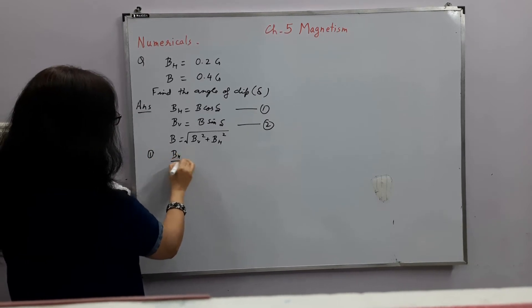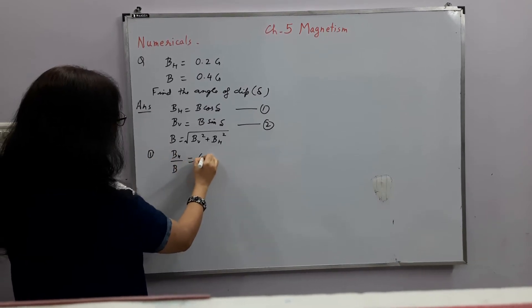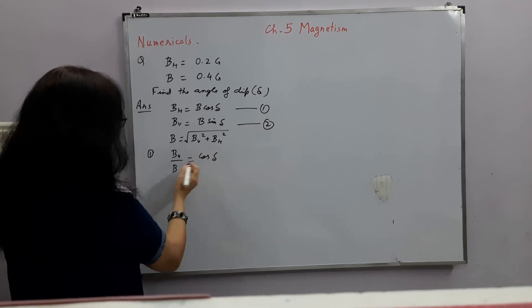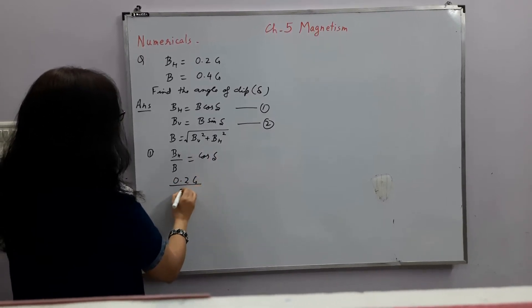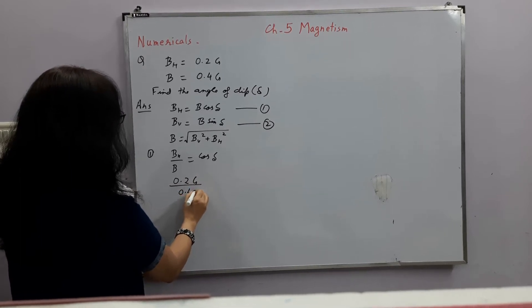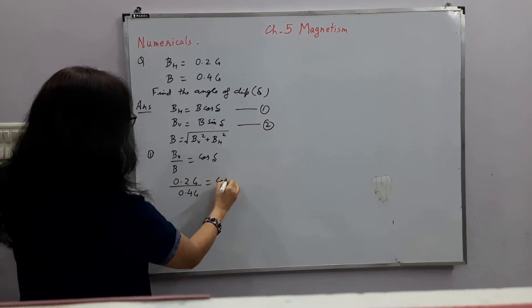So BH upon B is equal to cos delta and therefore this is 0.2 Gauss upon 0.4 Gauss gives cos delta.